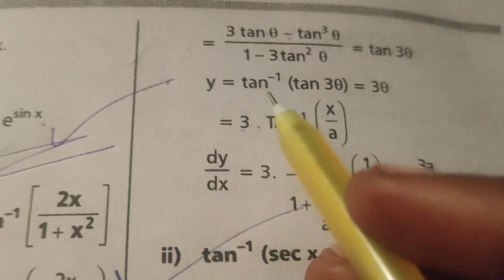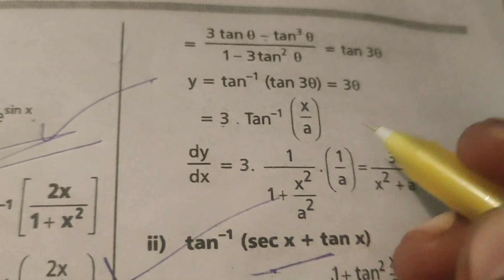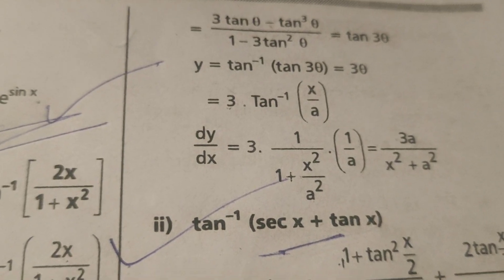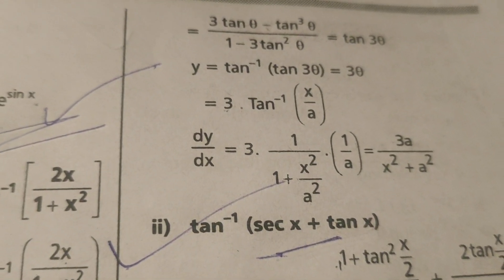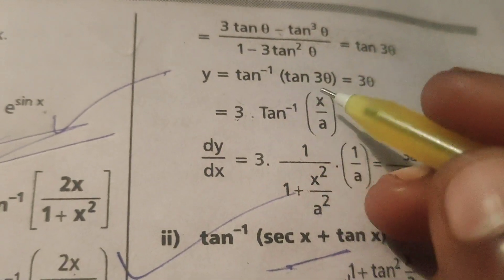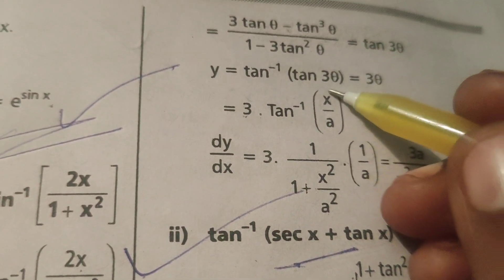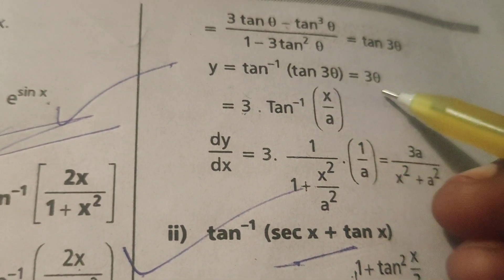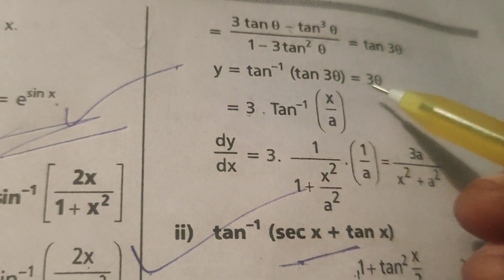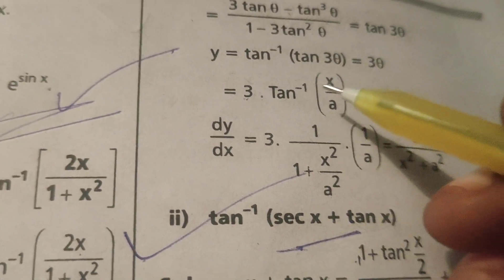We have y = tan⁻¹(tan 3θ). Using the inverse trigonometric formula tan⁻¹(tan x) = x, in place of x we have 3θ. Therefore y = 3θ.